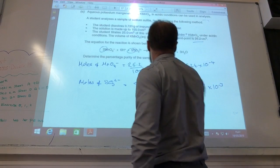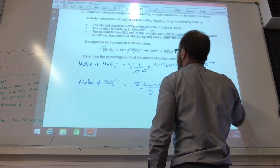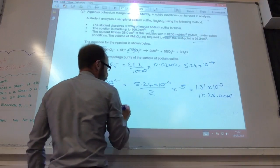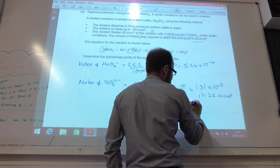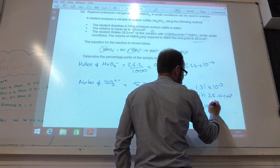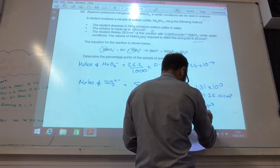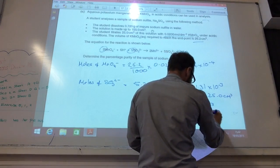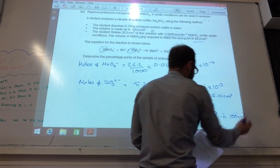Remember, that's in 25 centimeters cubed. The original solution was 100. So I need to do 4 times 1.31 times 10 to the minus 3, which gives me 5.24 times 10 to the minus 3 in 100 centimeters cubed.